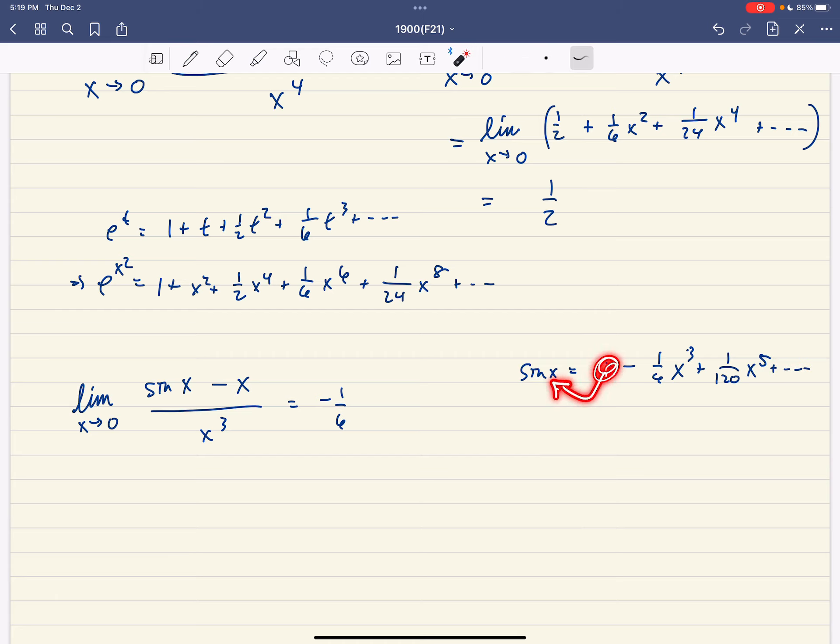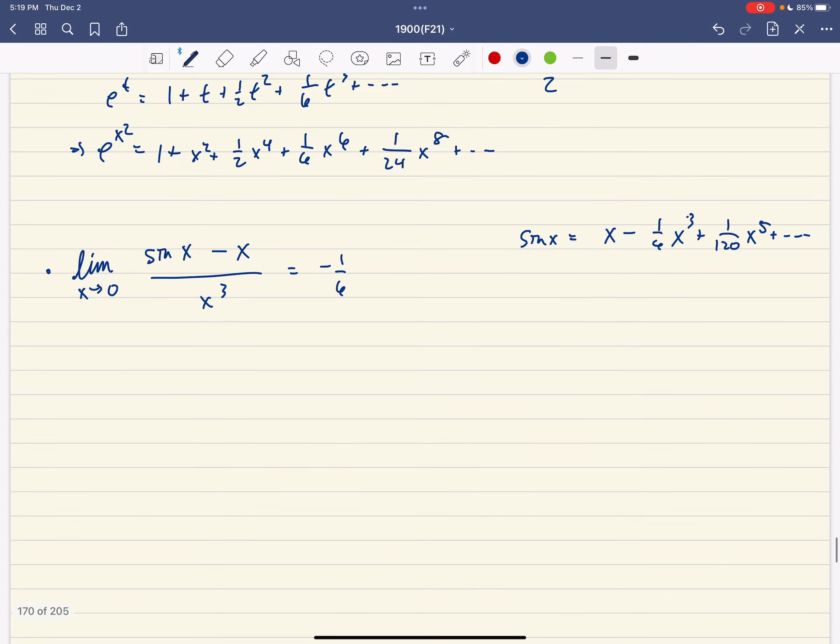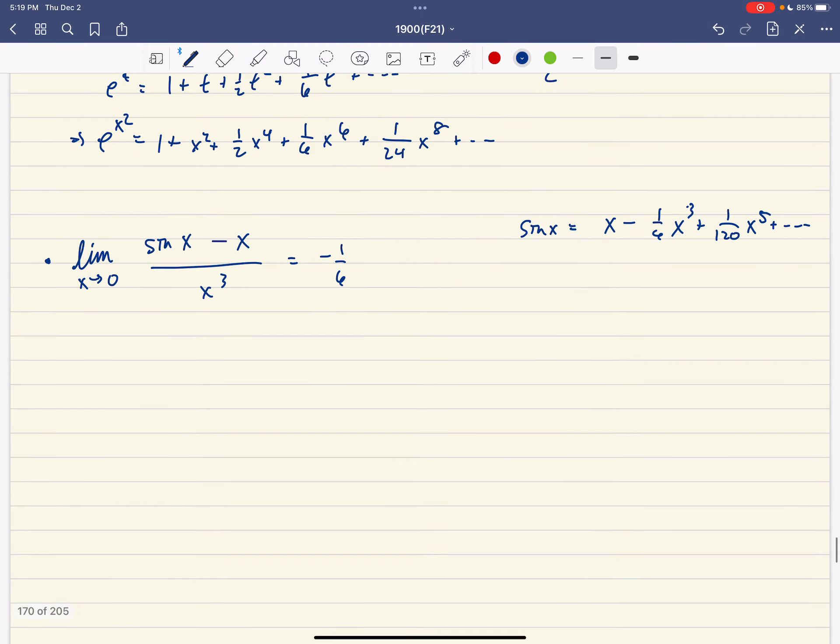And so that's going to end up being what the limit is. And so it turns out we can use Taylor series to get all these limits. And it turns out all of the limits that we've been talking about so far, at least the ones that we involve, like L'Hopital's rule, instead of using L'Hopital's rule three times, we get negative 1 sixth.